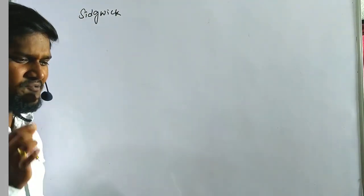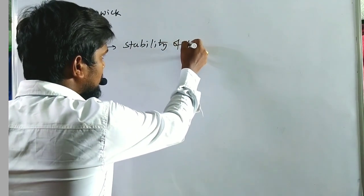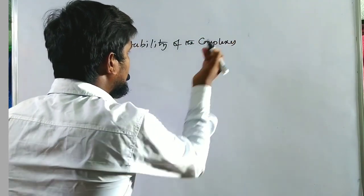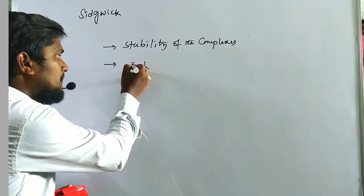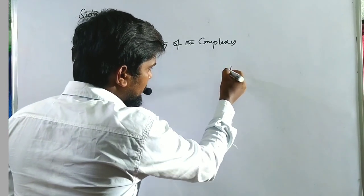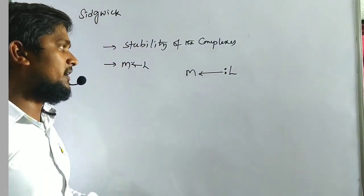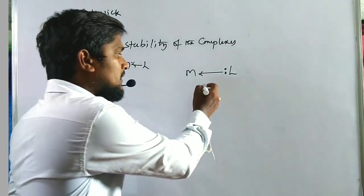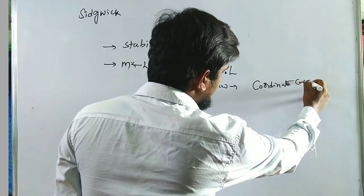Today's topic is Sidgwick theory — the second theory of complex compounds. According to Sidgwick theory, it gives information about the stability of complexes and the nature of ligand-to-metal bonding. The lone pair of electrons from the ligand donates to the metal atom, denoted by an arrow mark, which indicates the coordinate covalent bond.